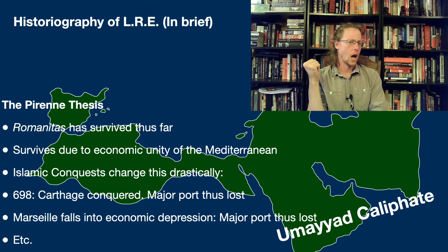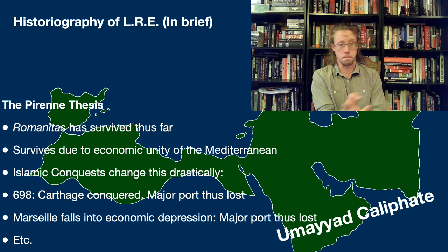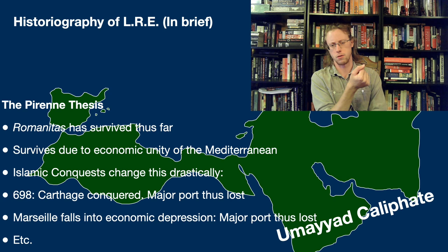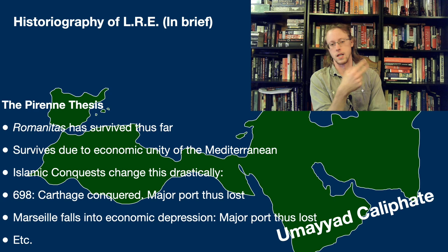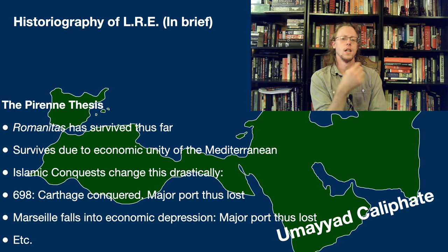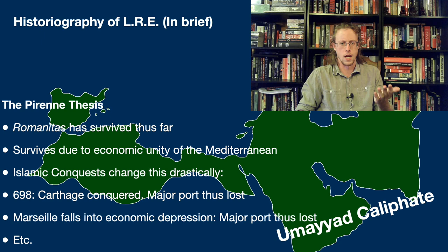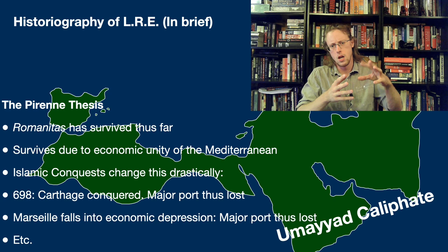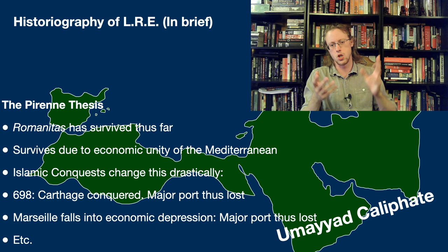For Pirenne, after the Islamic conquests take control of roughly half the Mediterranean coastline, there's a critical problem. Romanitas — this idea of being Roman, even outside the political Roman Empire — survived largely because of the economic unity of the Mediterranean. Roman trade still happened. But after the Islamic conquests and the near collapse of the Eastern Roman Empire, that system of trade breaks up. In 698, Carthage is conquered and a major port is lost. Marseille also falls into economic depression, losing another major port. The Islamic conquest cut a dividing line in Mediterranean trade, cutting northern and central Europe off from an economic zone it was originally part of, forcing Europe to retreat in on itself and start rethinking its identity.